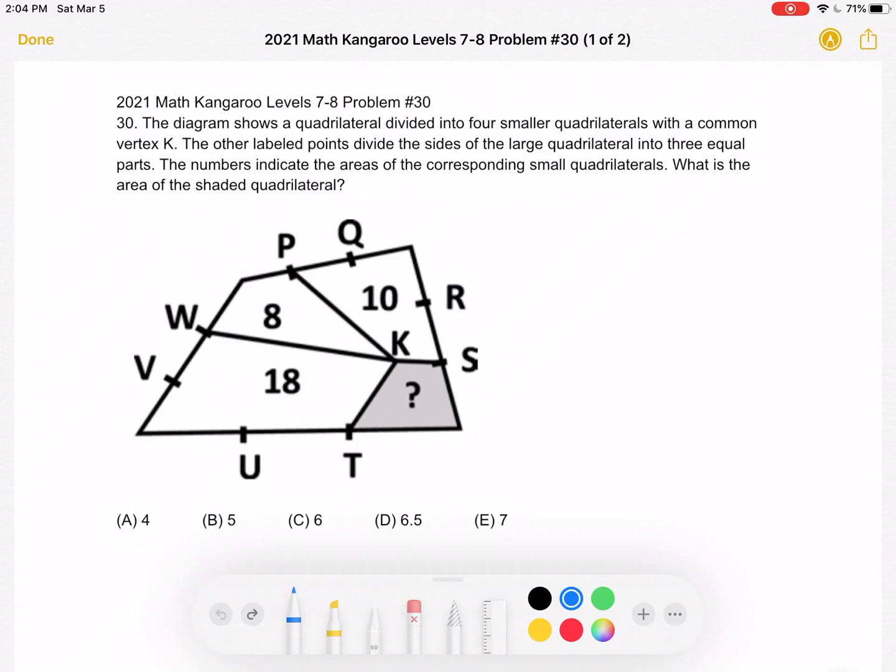This is the 2021 Math Kangaroo Levels 7-8, problem number 30. The diagram shows a quadrilateral divided into four smaller quadrilaterals with a common vertex K. The other labeled points divide the sides of the large quadrilateral into three equal parts. The numbers indicate the areas of the corresponding small quadrilaterals. What is the area of the shaded quadrilateral?